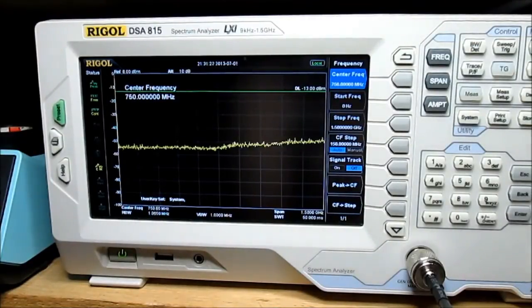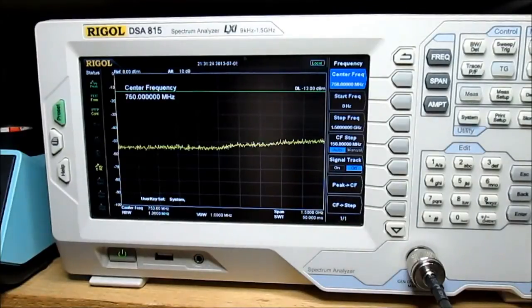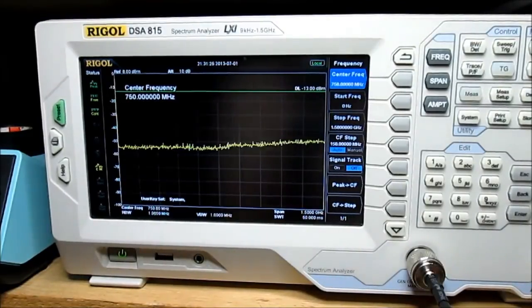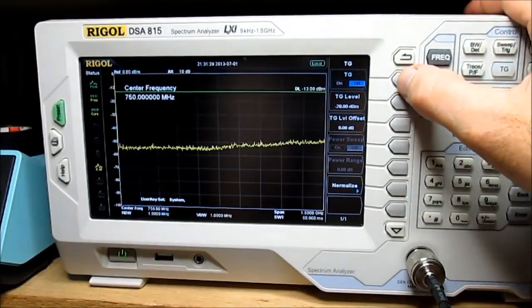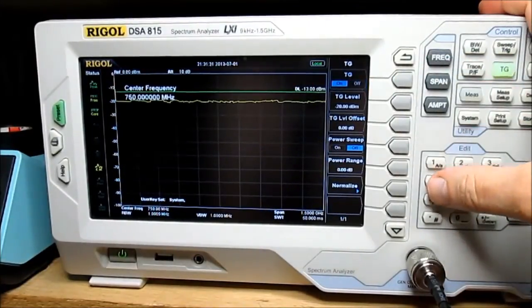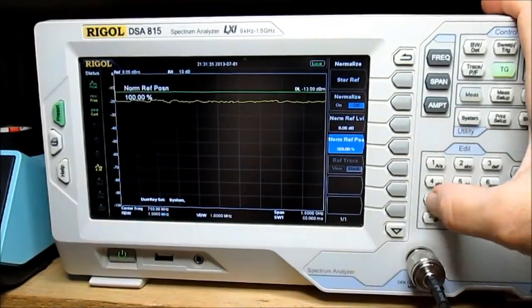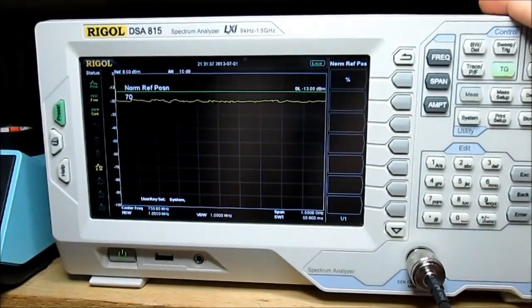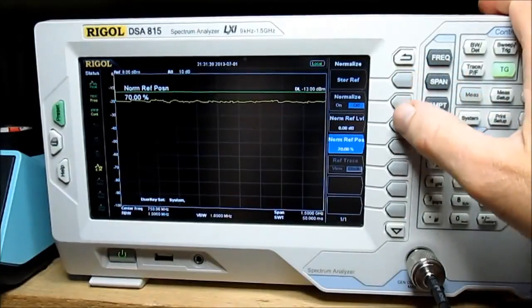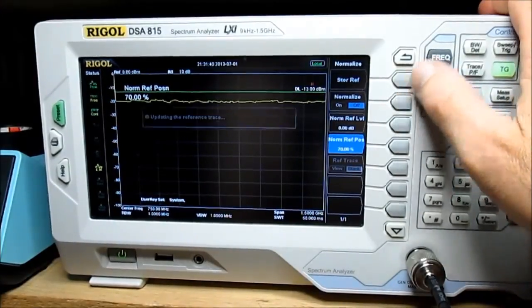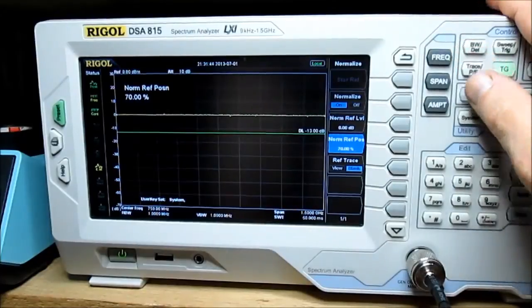Alrighty, so got that connected. We'll turn on the tracking generator and we'll go down to normalize. Let's move the reference down a little bit, just makes it easier to work with. Seventy percent. And hit normalize. There we go.